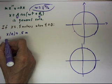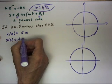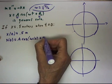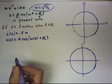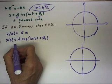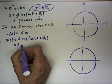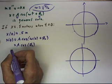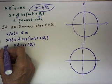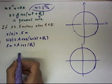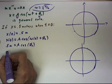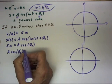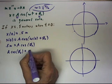Now, x of zero equals A times the cosine of omega times zero plus phi nought. And omega times zero is just zero, so this is just A times the cosine of phi nought. And this equals point five meters because x of zero is point five meters. So we have the equation A cosine of phi sub zero equals point five meters.